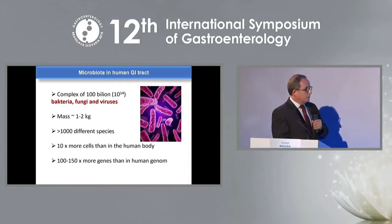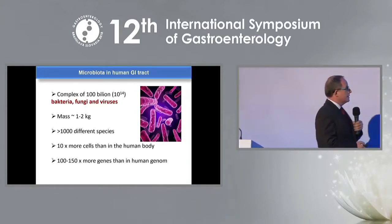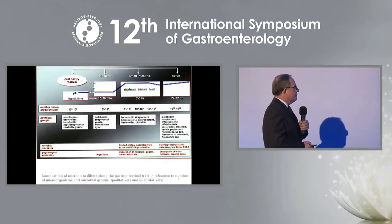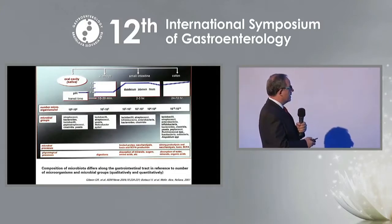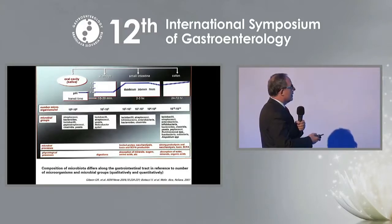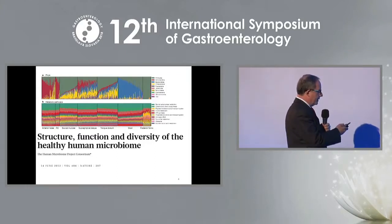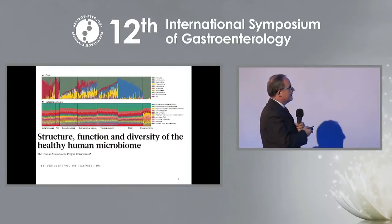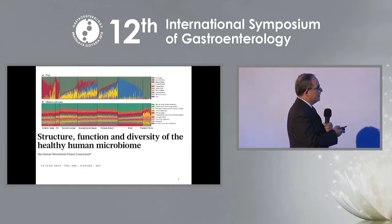Ladies and gentlemen, as you know from previous lectures, microbiota of the human GI tract is very complex. The composition of microbiota differs along the gastrointestinal tract in reference to number of microorganisms and microbial groups. The structure differs between organs; however, the function seems to be very similar — for example, metabolic pathways.